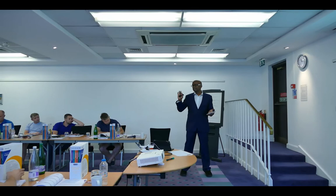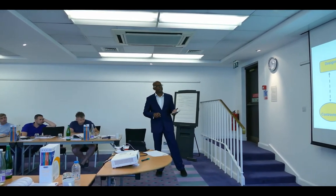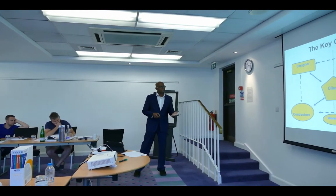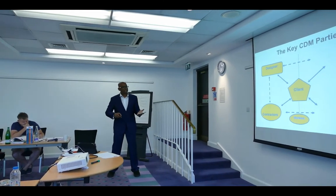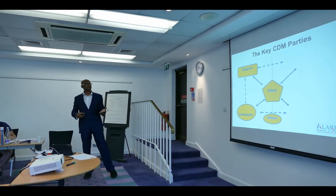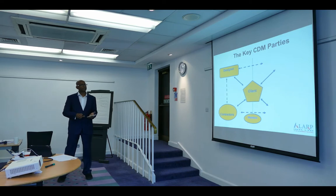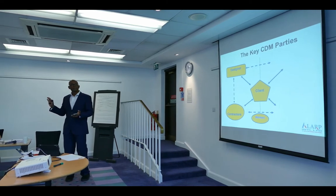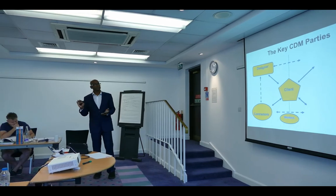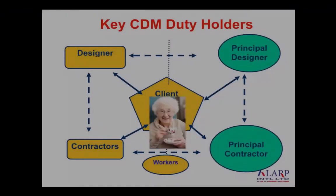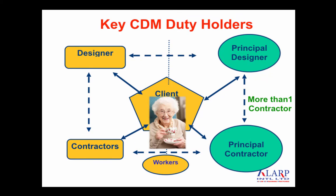Critically, three key players: one is the client who wants a job done or executes the whole job. Then you have the planning stage and the execution stage, done by the designer and the contractors. CDM 2015 says that where there are more than one contractor, you must appoint a principal designer and a principal contractor — that is a big distinction.